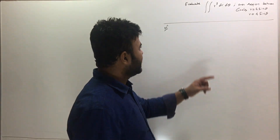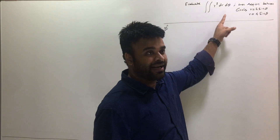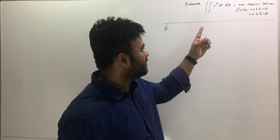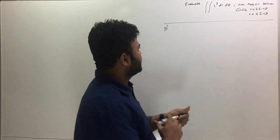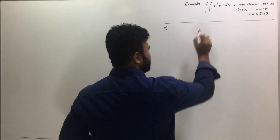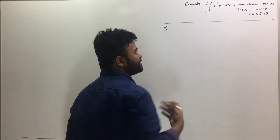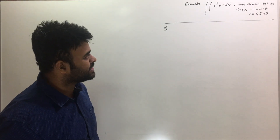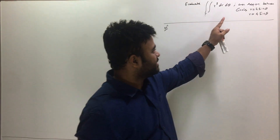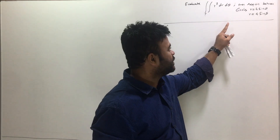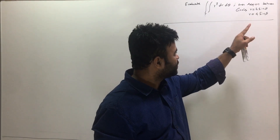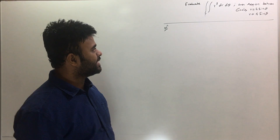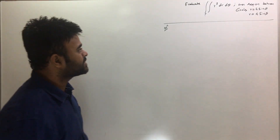If you see here, this is completely written in terms of r and theta and not x and y, so this is a polar form. You will also notice that the limits of integration are not given. To find out the limits of integration, they mention the region. The region is between two circles: r = 2sinθ and r = 4sinθ. Let's get started and solve this question.